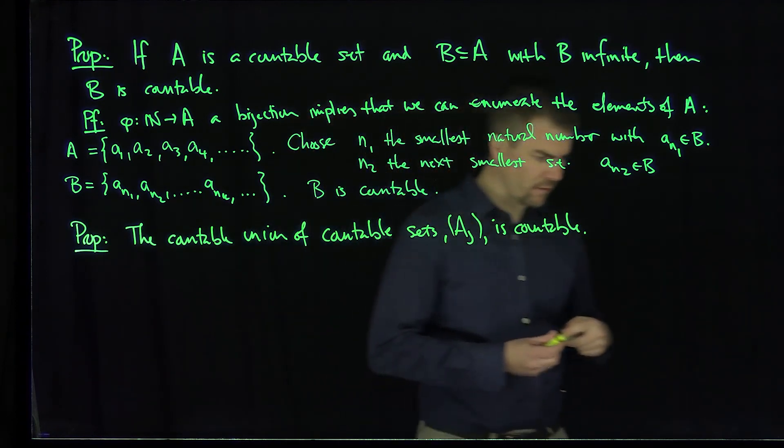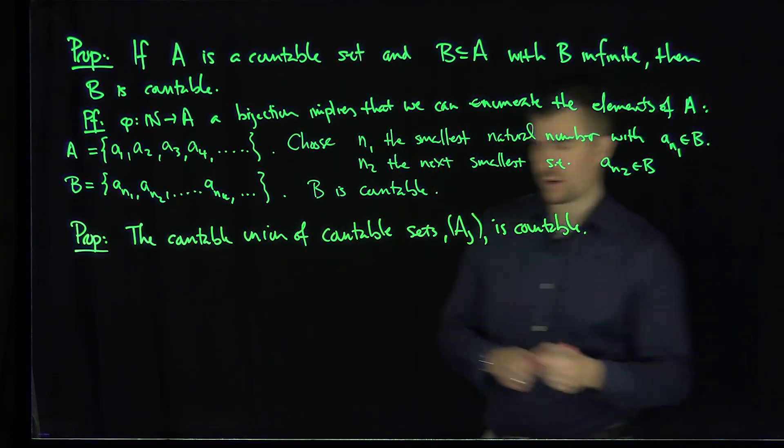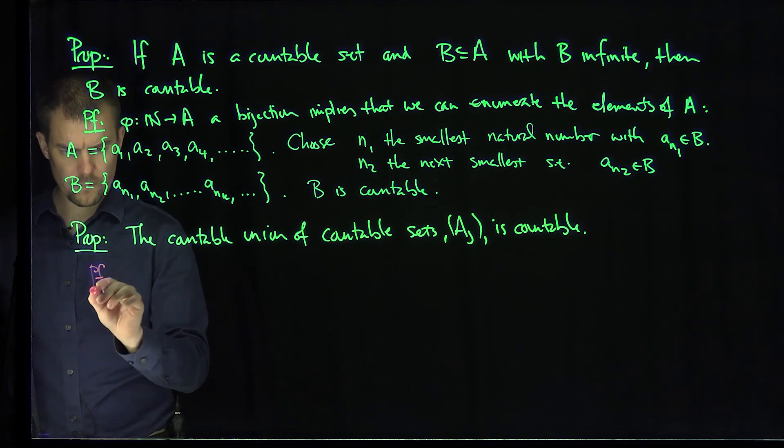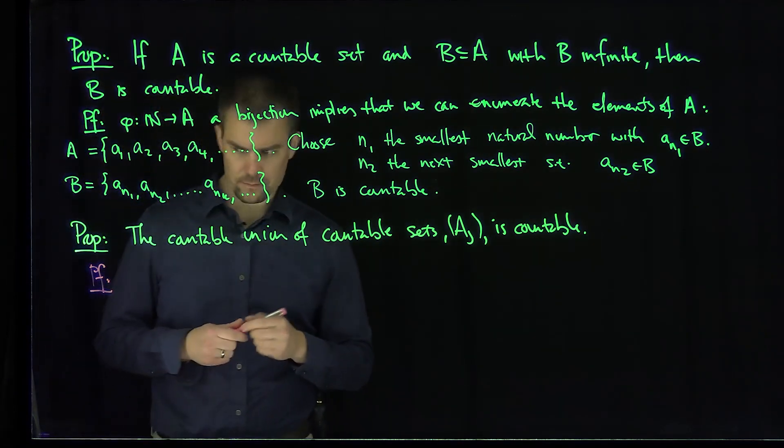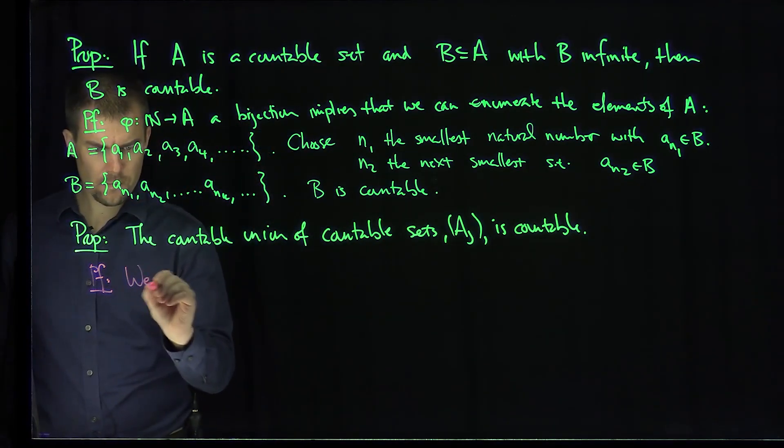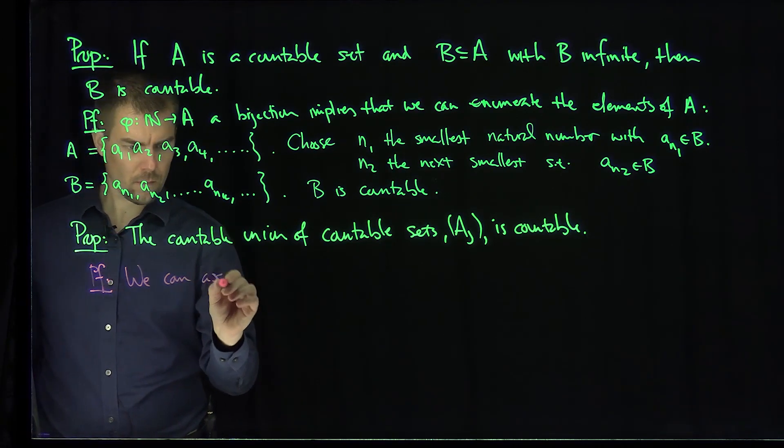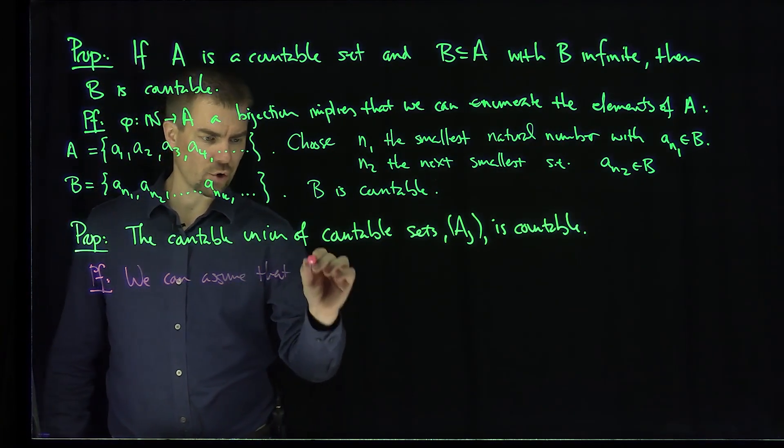And so what we can do is actually, this is a very useful construction without loss of generality. So proof: we can assume that the A_J are disjoint.